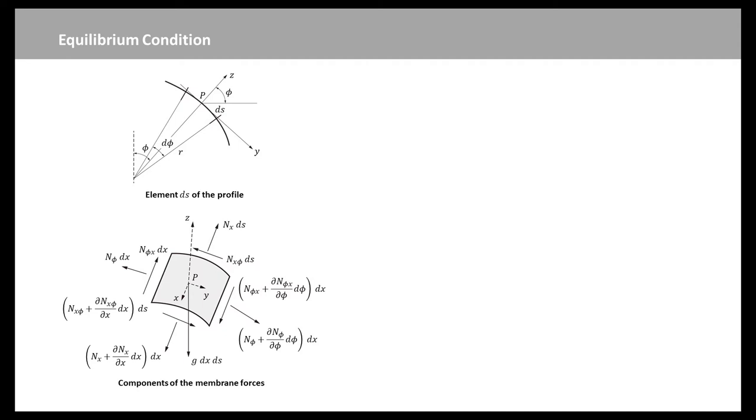The load per unit area of the shell element is the weight g. The element of surface has area dx times ds and the total load acting on the element is g times dx times ds.